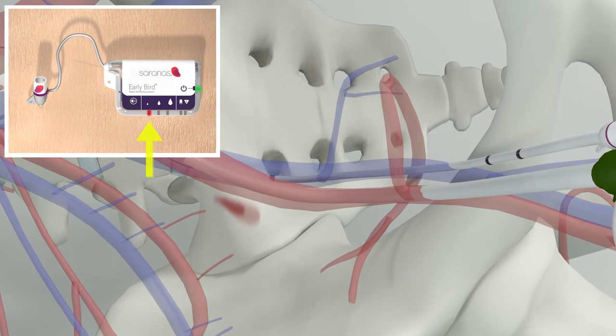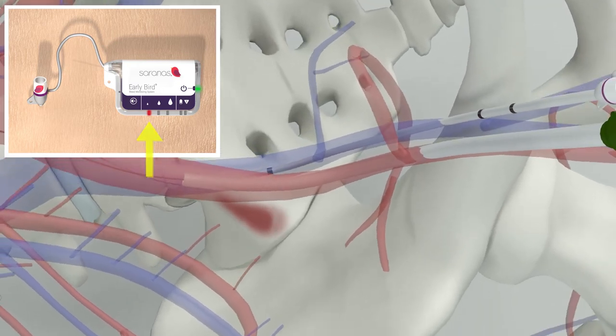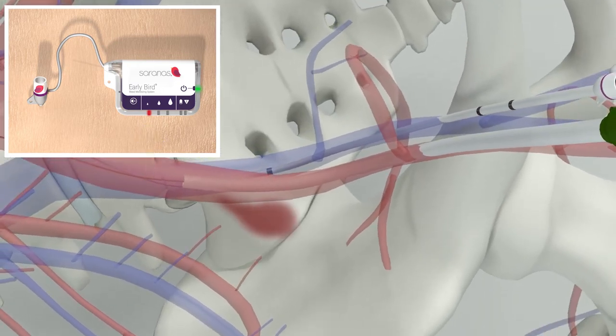When placed in the vessel, the bleed detection array generates a regional bioimpedance signal to monitor a patient's bleed status.